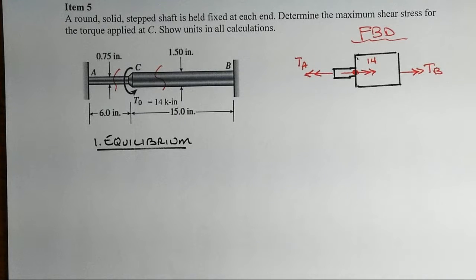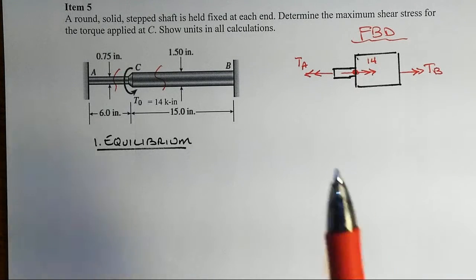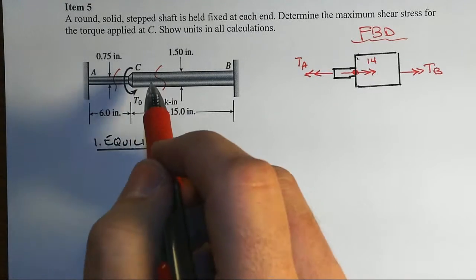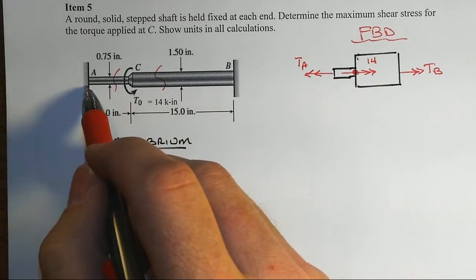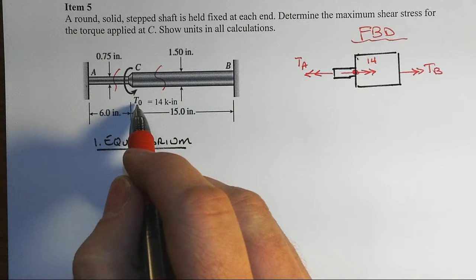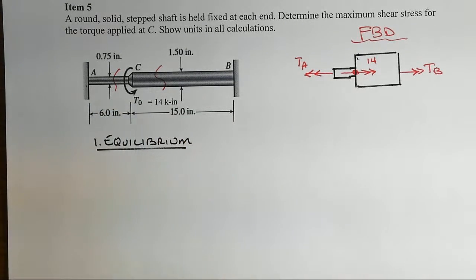In this fifth item on the exam, we've got a rod that is solid but it has different radii. It's fixed at its two far ends and it has an applied couple or torque that is 14 kip inches at point C.